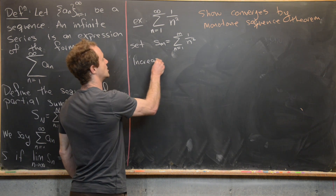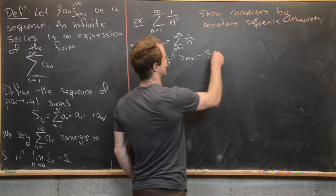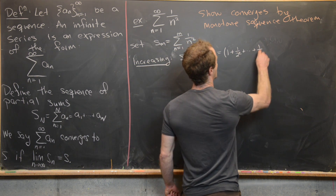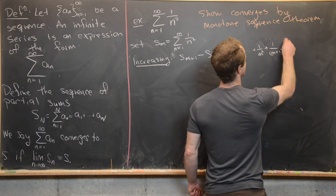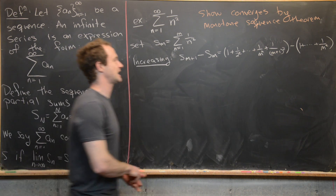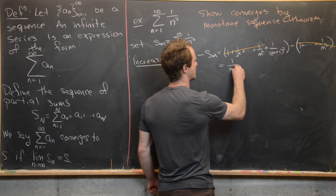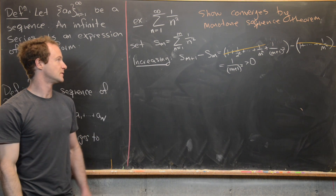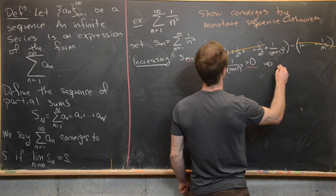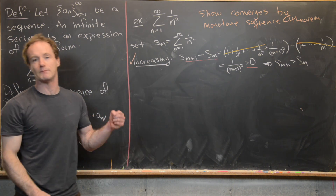Let's start by showing that this is an increasing sequence of numbers. We can do that by looking at the difference of S_{m+1} with S_m. Notice that equals 1 plus 1 over 2 squared plus ... plus 1 over m squared plus 1 over (m+1) squared, minus 1 plus all the way up to 1 over m squared. Tons of stuff cancels here, and we end up with this difference equal to 1 over (m+1)², which is always positive. So S_{m+1} minus S_m is always positive, which means S_{m+1} is bigger than S_m — we've shown this is a monotone increasing sequence.